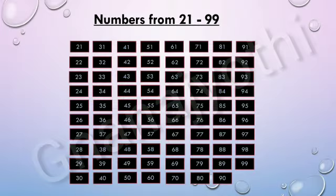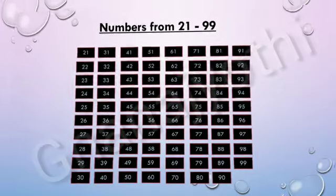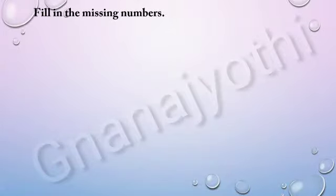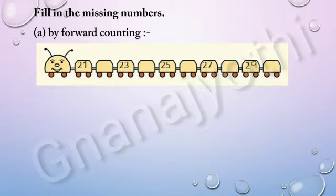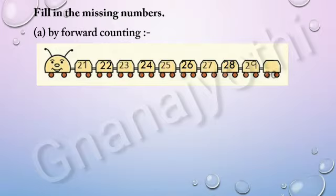Now, let us fill in the missing numbers by forward counting. Here we have 21. Let us count in the forward direction and fill the missing numbers: 21, 22, 23, 24, 25, 26, 27, 28, 29, 30. The missing numbers are 22, 24, 26, 28 and 30.